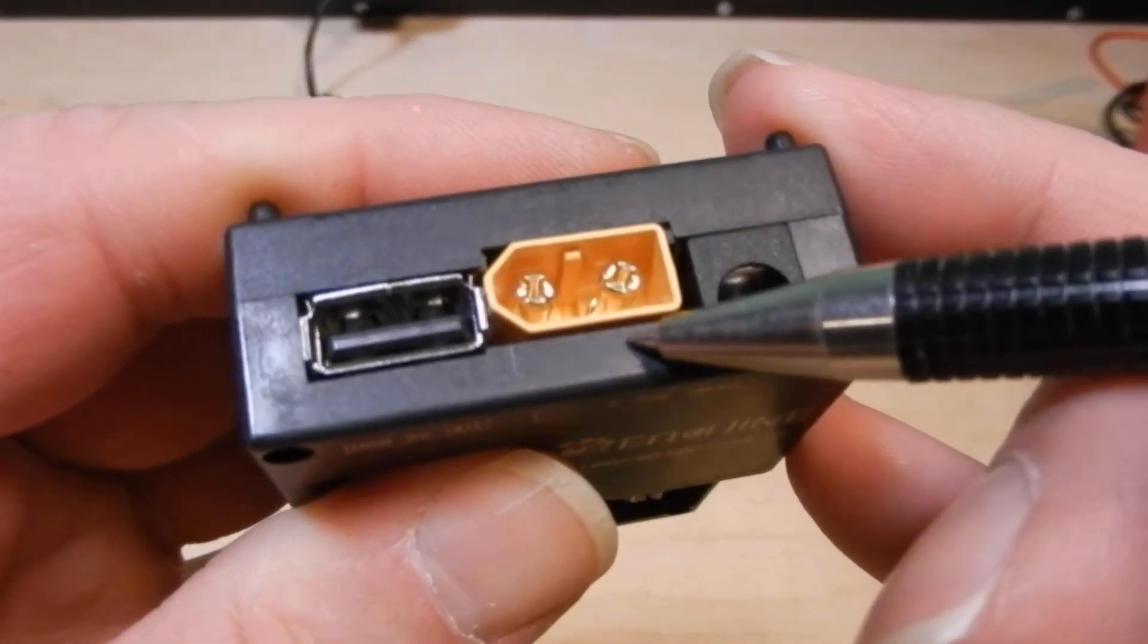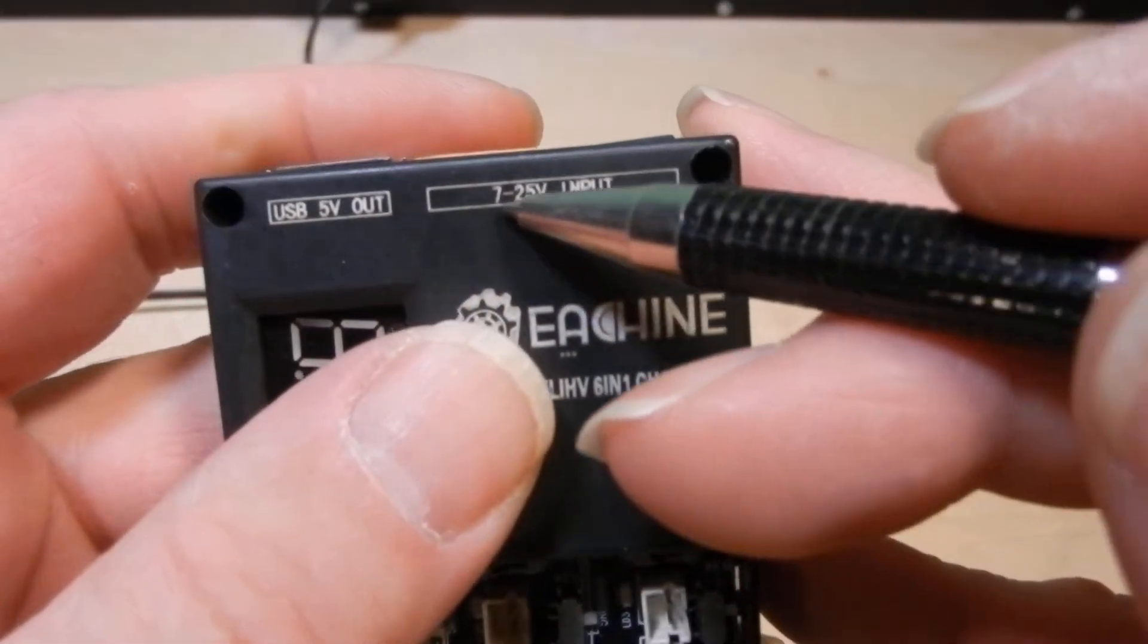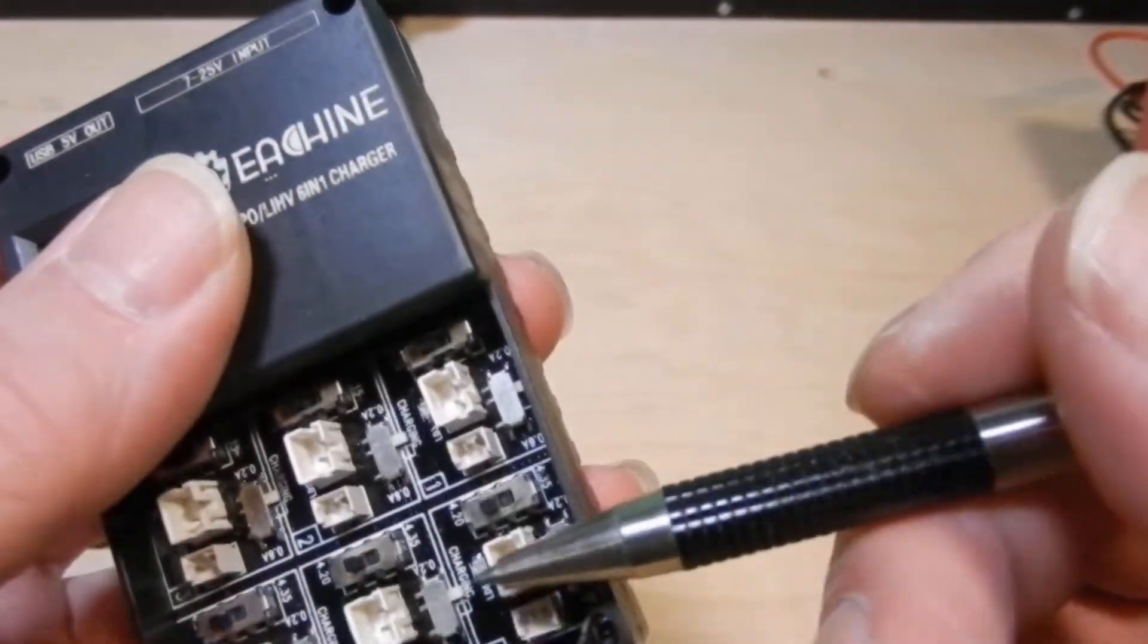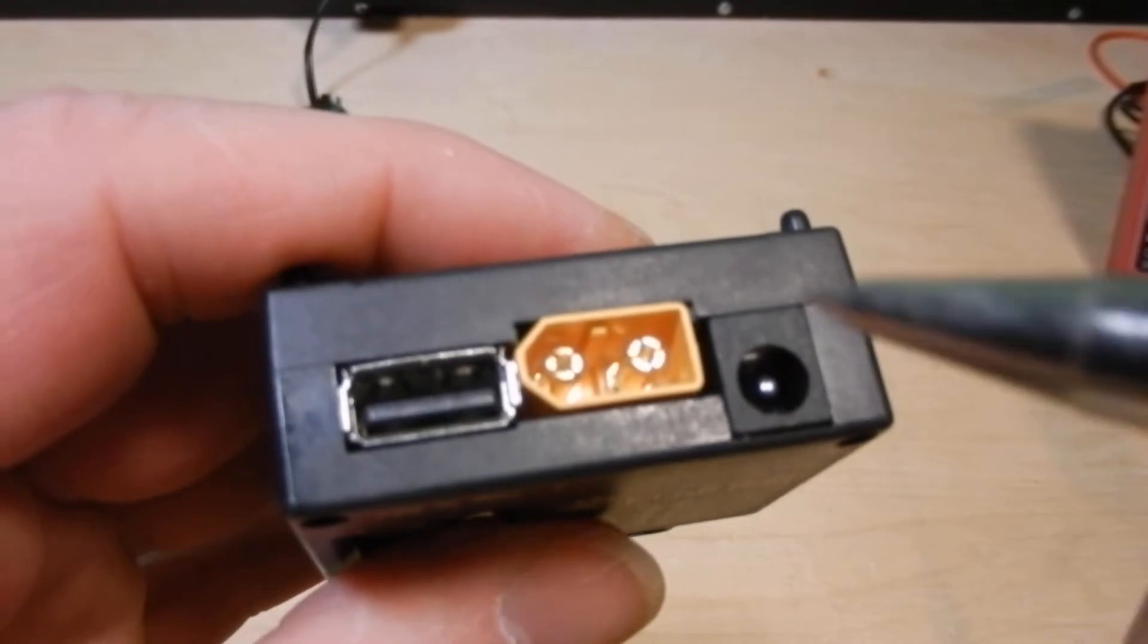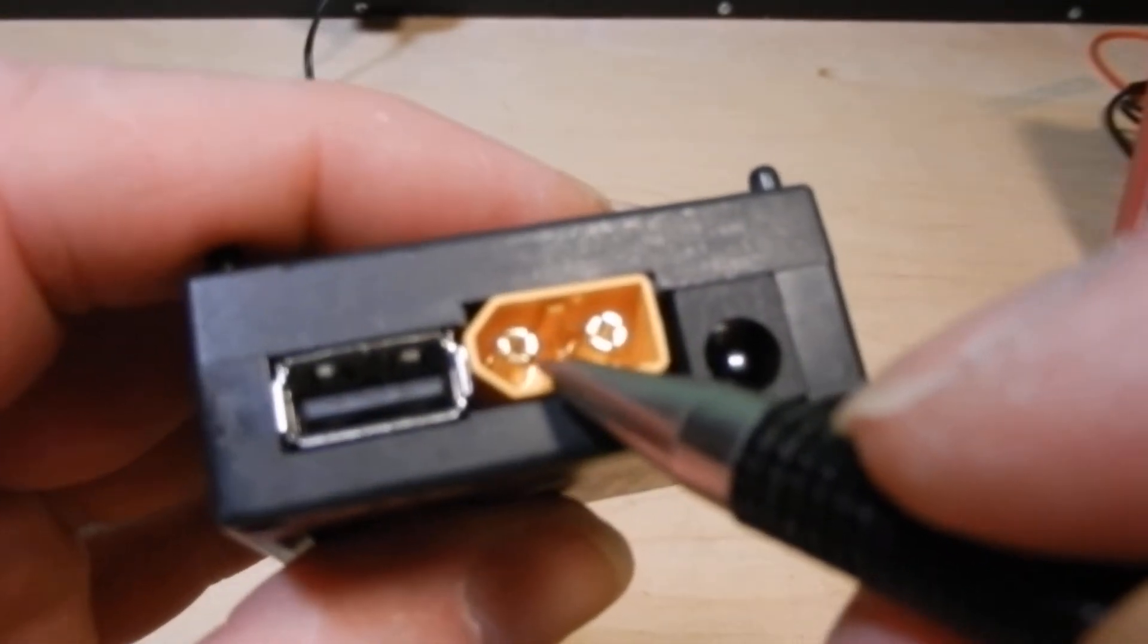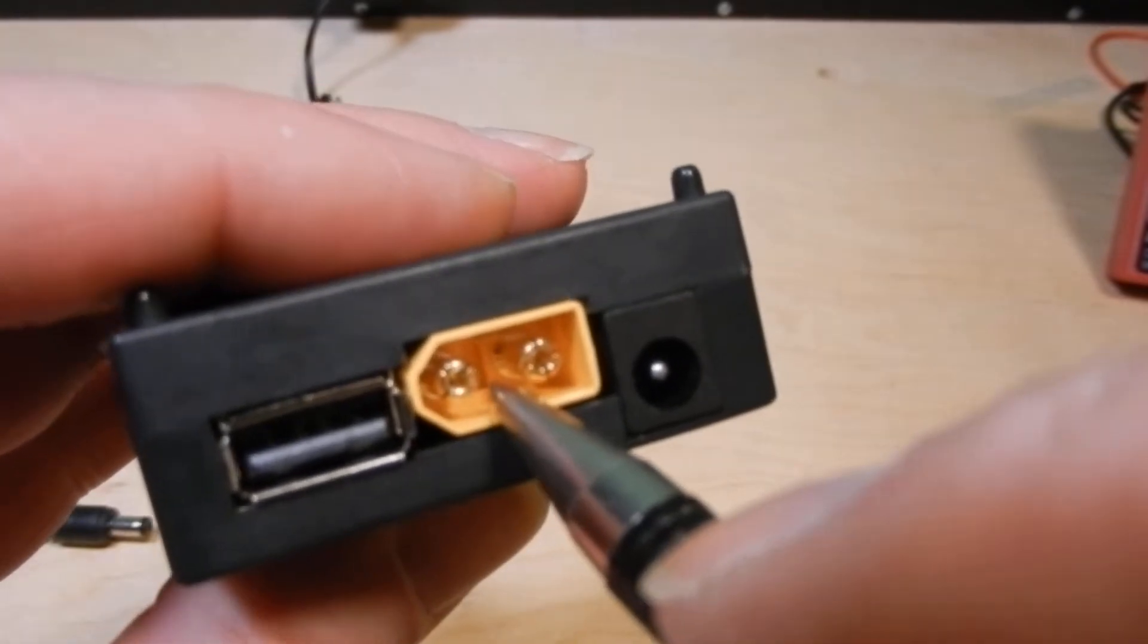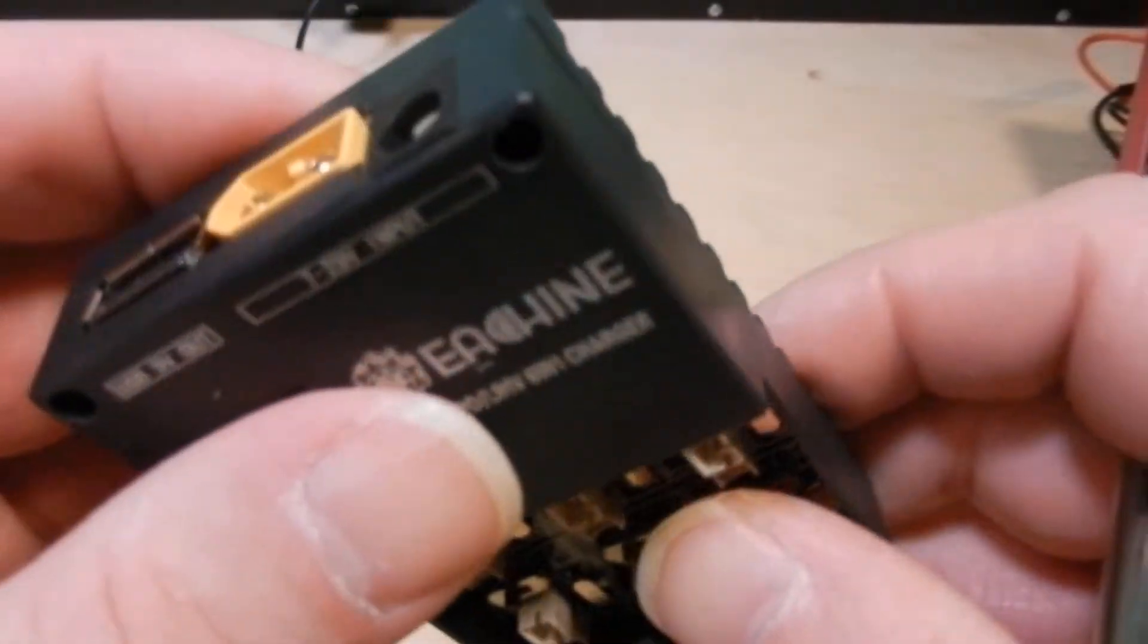You have an XT60 connector that you can put in either from a 2s to a 6s battery to charge the little micro batteries. But I honestly would probably not go with anything more than a 4s just to be on the safe side. I've done it with 3s batteries and it works out just fine.